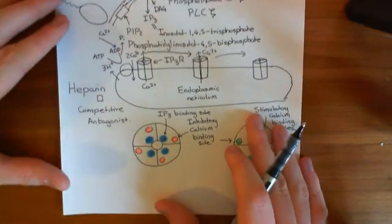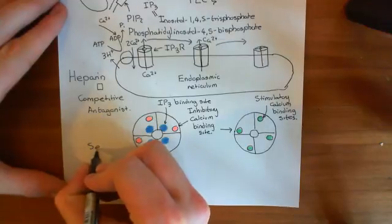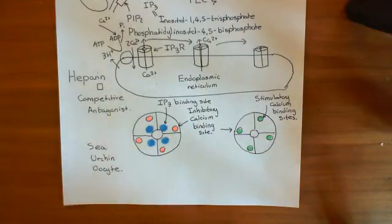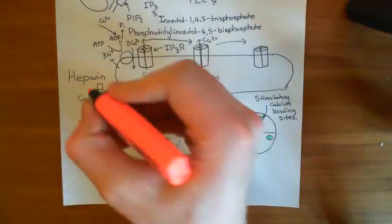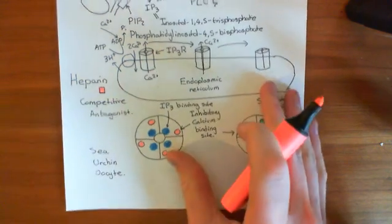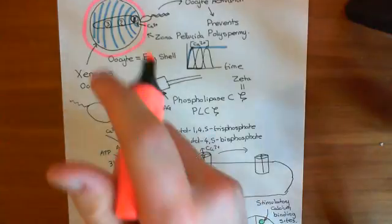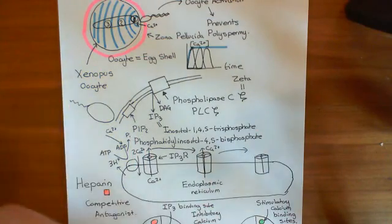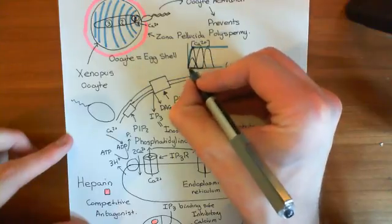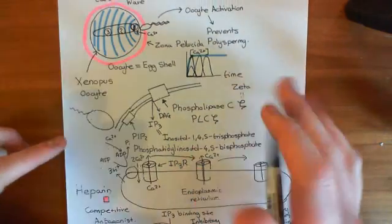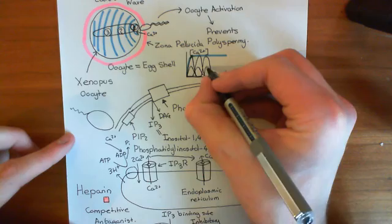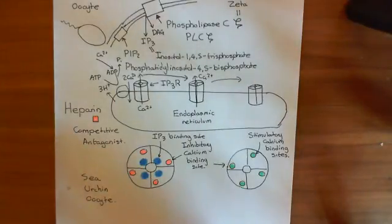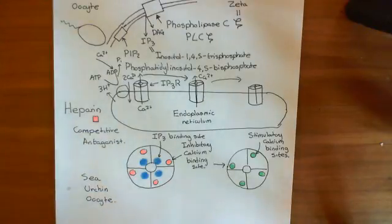But if we now use an oocyte from a different species — namely the sea urchin — we find something different. If we administer heparin to the sea urchin oocyte, what you see is an attenuation of the calcium waves. If you actually measure the calcium waves, the rise in calcium concentration that you get everywhere is slightly lower. So the amount by which calcium rises everywhere is reduced, but you do still get a calcium wave that propagates through the cell.